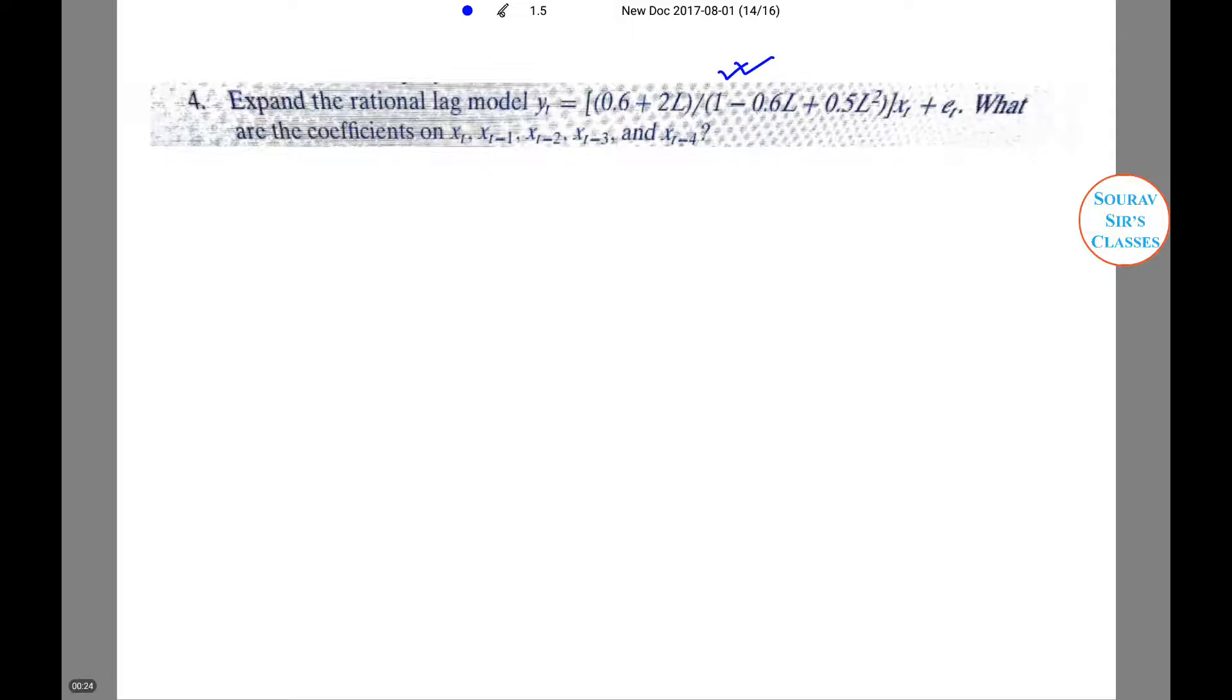We are required to find the coefficient of this. So let us start. The ratio of polynomials will equal, which is equal to what we have. We'll write the function B by 1 minus 0.6L plus 0.5L square.